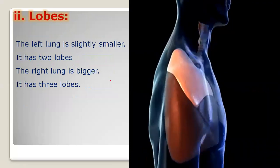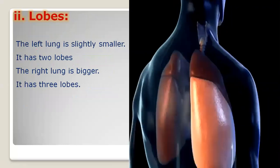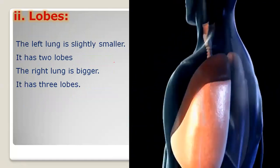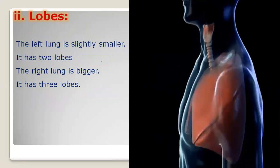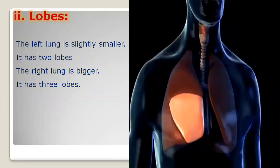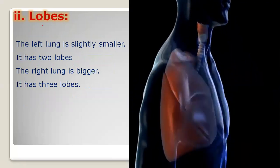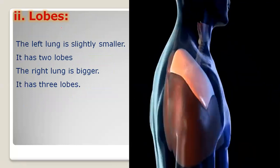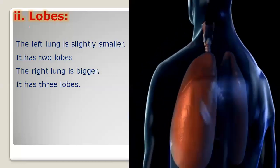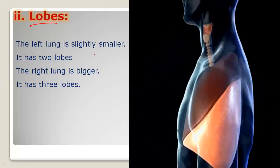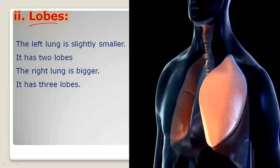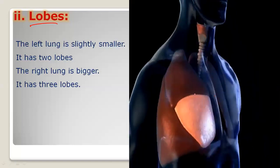The lungs are formed by different lobes — they are not just a lump of tissue but are spongy, made up of pieces called lobes. We have two lungs. The left lung is slightly smaller than the right lung. This difference exists because a portion on the left side is left to accommodate the heart.